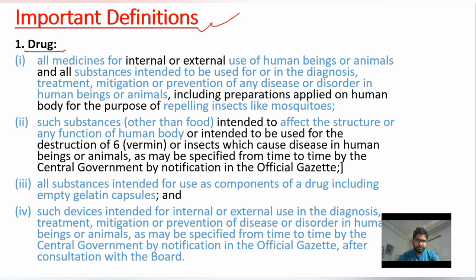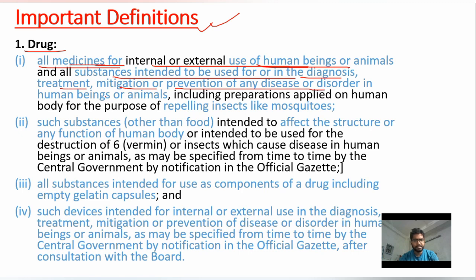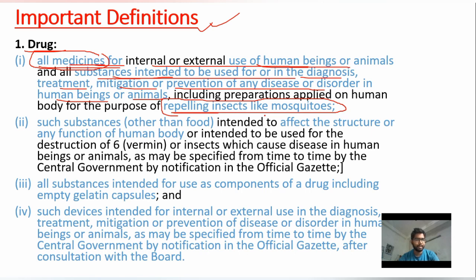Drug means all medicines for internal or external use in human beings or animals. It also includes substances intended to be used for diagnosis, treatment, mitigation, or prevention of any disease or disorder in human beings or animals. Interestingly, mosquito repellent creams and substances that repel insects also come under the drug section according to this Act.